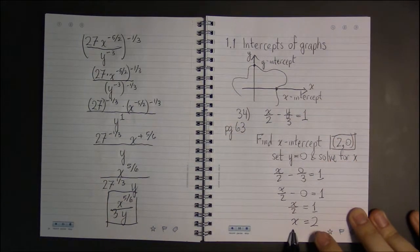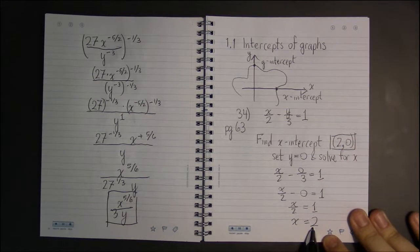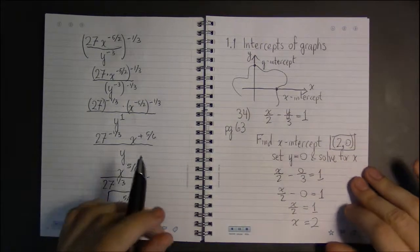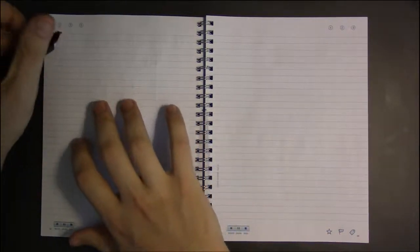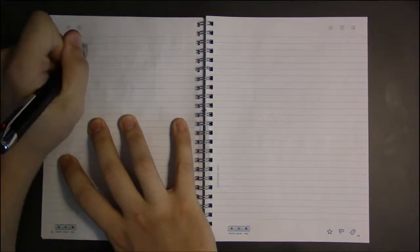Or sometimes we'll even say that the x-intercept is just x = 2, knowing that this represents a point where the x-coordinate is 2 and the y-coordinate is 0. Now we have to find the y-intercept.